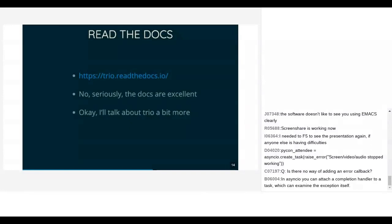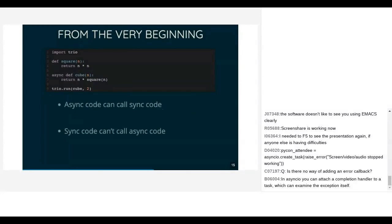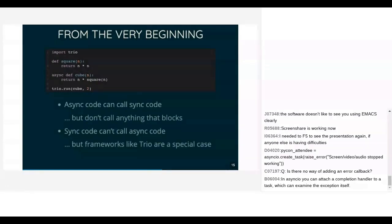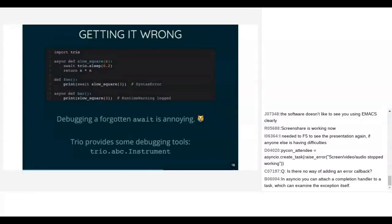Brief intro to async programming: async code can call sync code — but don't call anything that blocks — and sync code can't call async code unless you're writing a framework like Trio or asyncio, where there are special mechanisms to make that work. Here are some ways you can get async code wrong. The first is to try and await something in a sync function — you'll know immediately because the compiler gives you a syntax error. You're not going to miss that.